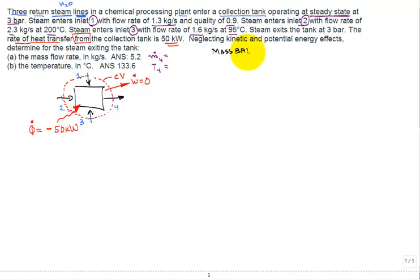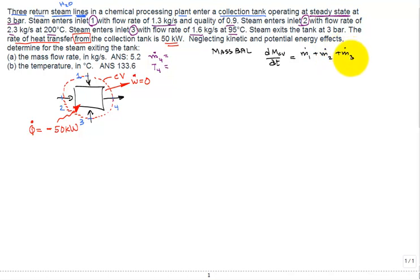The mass balance for a control volume states that the rate of change of mass with respect to time equals the sum of all mass flow rates in minus those out. We have mass flow rates coming in at streams one, two, and three, and exiting at four. At steady state, we know streams one, two, and three, so we only need to solve for ṁ₄ — that's straightforward.